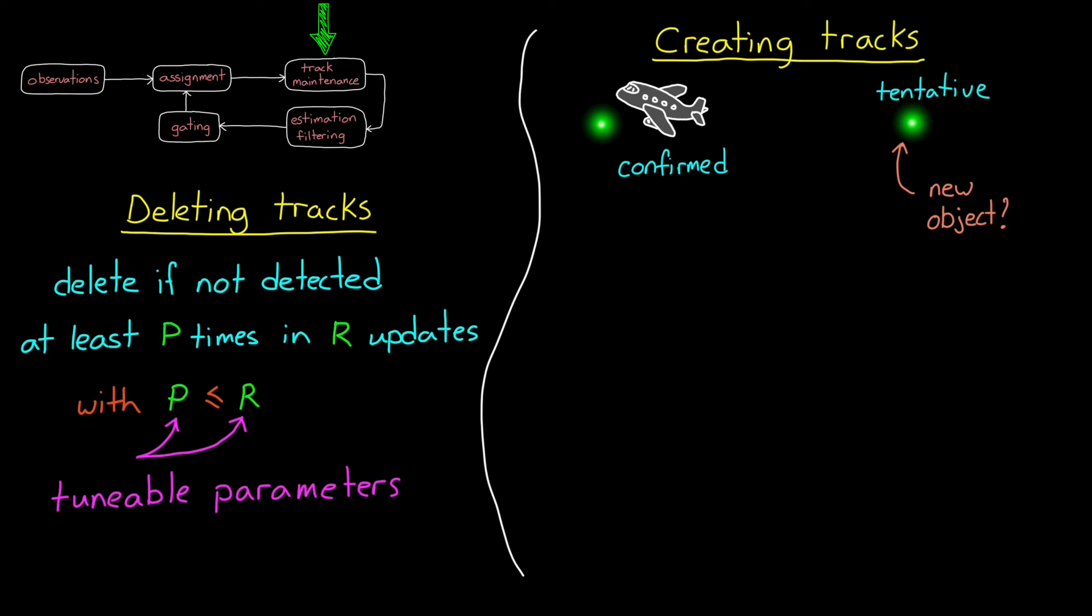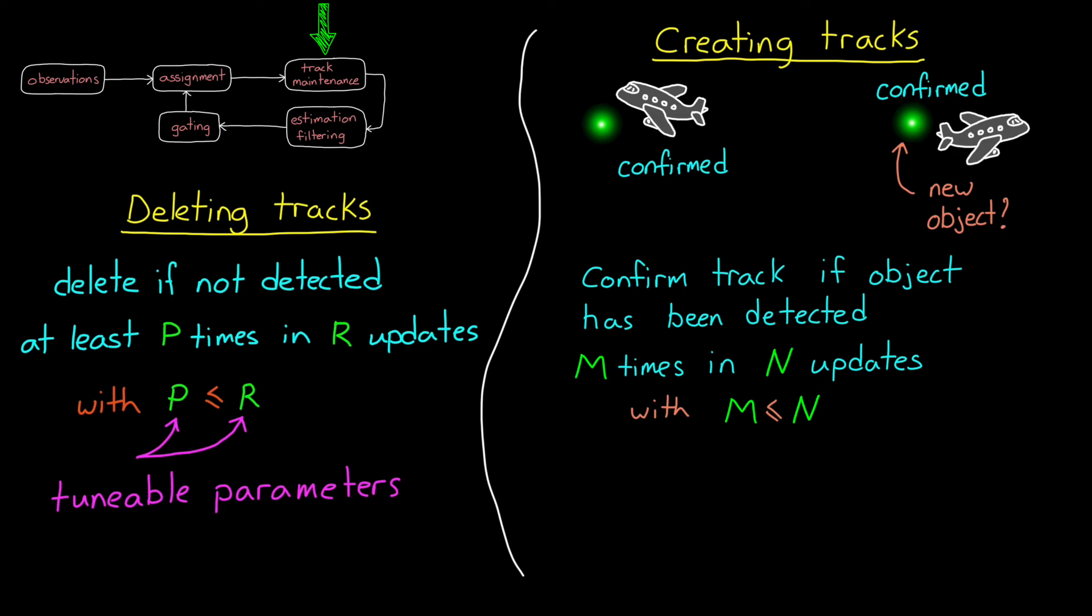Once the tentative track has been detected m times in the last n updates, then you move that track to confirmed, which means that you think it is a real object. And we can remove a tentative track with the same logic as removing a confirmed track.